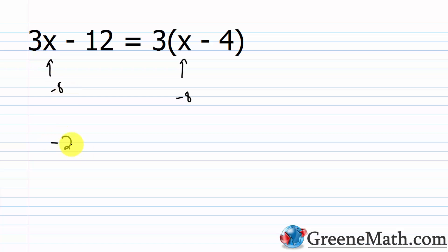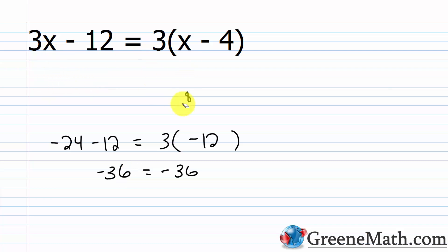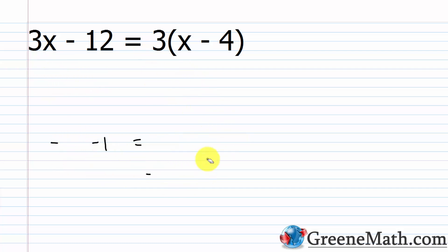So 3 times negative 8 is negative 24, minus 12, equals 3 times the quantity negative 8 minus 4. Negative 8 minus 4 is negative 12, so 3 times negative 12 is negative 36 on the right. On the left, negative 24 minus 12 is also negative 36. Now let's pick 4 and see what happens.